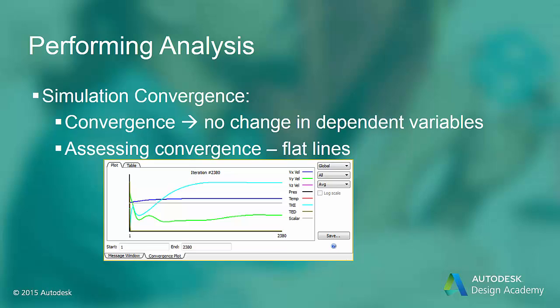How do we know when the simulation has converged to a solution? Simulation convergence implies that the solution is not changing anymore as the simulation continues to iterate. To assess whether the simulation is converging, we can plot the change in the max, min, and mean of the dependent variables. When these values are no longer changing and the slopes of the curves have gone to zero, or a very small number, the solution is converged. Autodesk CFD monitors this information and the solution is automatically stopped when the internal assessment criteria is reached.